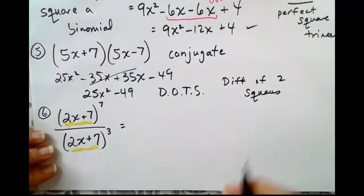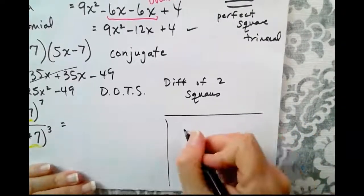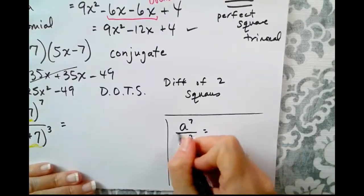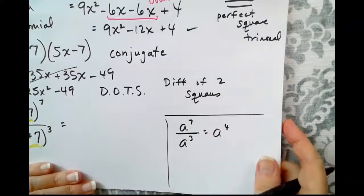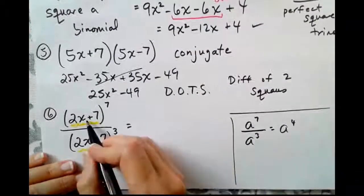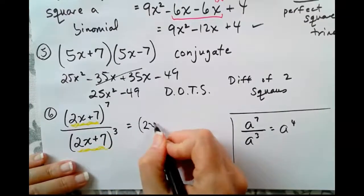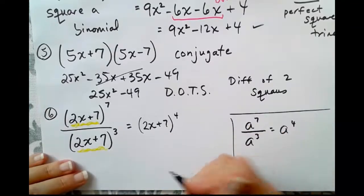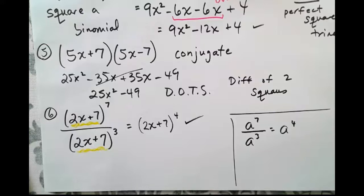If we consider a simpler problem, what if we just had a to the 7th over a to the 3rd? If we're dividing and the bases are the same, we should just subtract those exponents, which is what we're going to do here. 2x plus 7 to the 7th, 2x plus 7 to the 3rd, the quotient is simply 2x plus 7 to the 4th, which you can multiply out. It would just be long-winded, so we're going to leave it just like that. And that is your 8-minute review of polynomials.